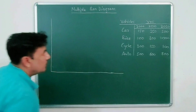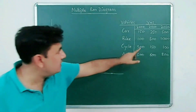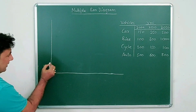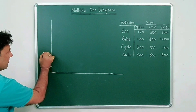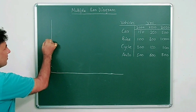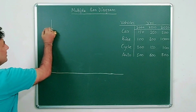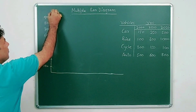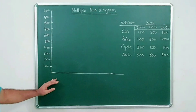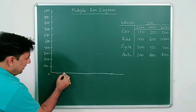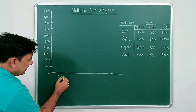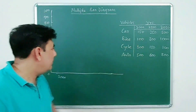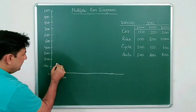To set up the axes, note that the smallest figure is 100 and the maximum figure is 1000, with gaps of 50. So mark the y-axis as production: 100, 200, 300, 400, 600, 700, 800, 900, 1000. On the x-axis, mark the years starting with 2000.